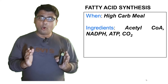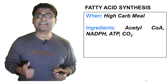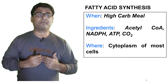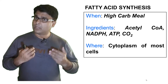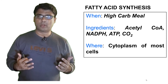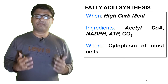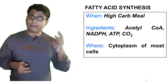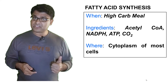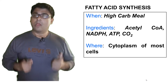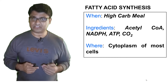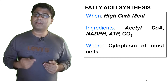You should also know where fatty acid synthesis occurs — it occurs in the cytoplasm of most cells of your body, particularly the liver. So remember these three points before we jump into the real pathway: when does it happen (high carbohydrate meal), what ingredients are required (four of them), what are their sources, and where does it happen (cytoplasm).